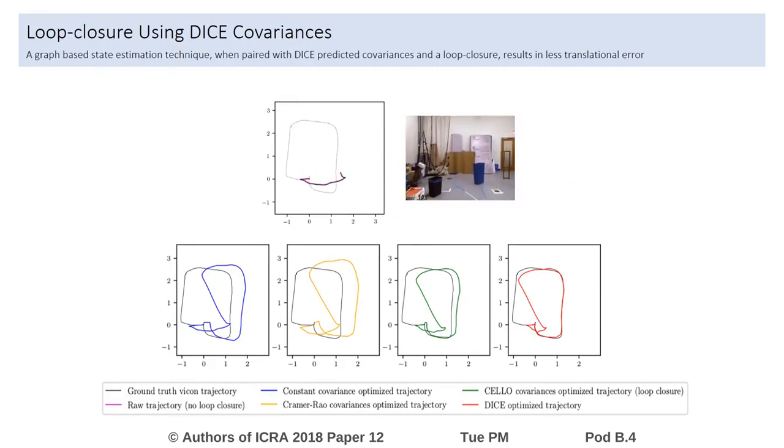These covariances are critical for improving the state estimates in the case of a loop closure. DICE, shown in red, is able to reduce the accumulated drift in the raw trajectory in purple and better reconstruct the trajectory compared to three other methods.